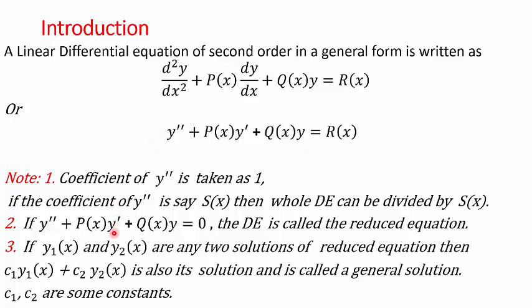The second thing: what if the right hand side of such a differential equation is 0? In that case, we get y'' + p(x)y' + q(x)y = 0. Such a differential equation is called a reduced second order differential equation, also called a homogeneous second order differential equation. In this video, we will be solving such differential equations.